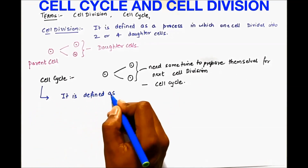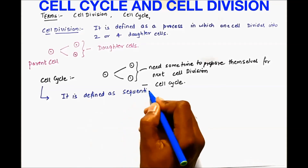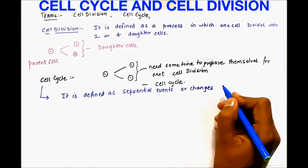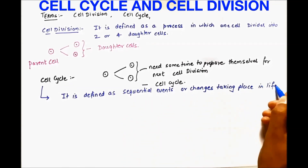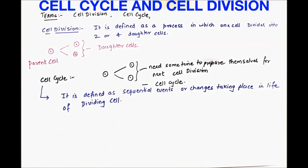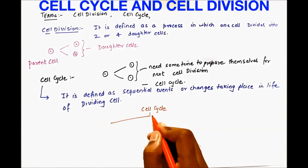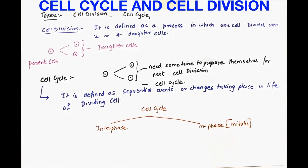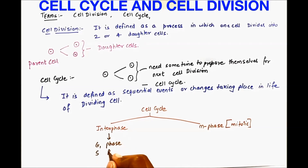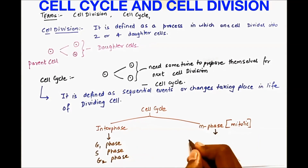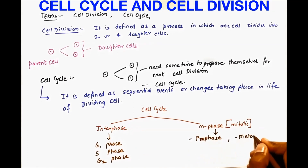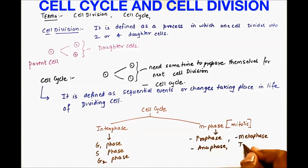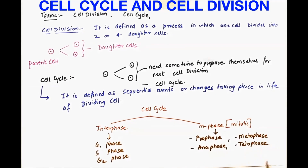So what is the cell cycle? It is defined as sequential events or changes taking place in the life of a dividing cell. The cell cycle consists of 2 phases: interphase and the M phase. M phase is the mitotic phase. Interphase consists of G1, S, and G2 phase, while M phase consists of prophase, metaphase, anaphase, and telophase.